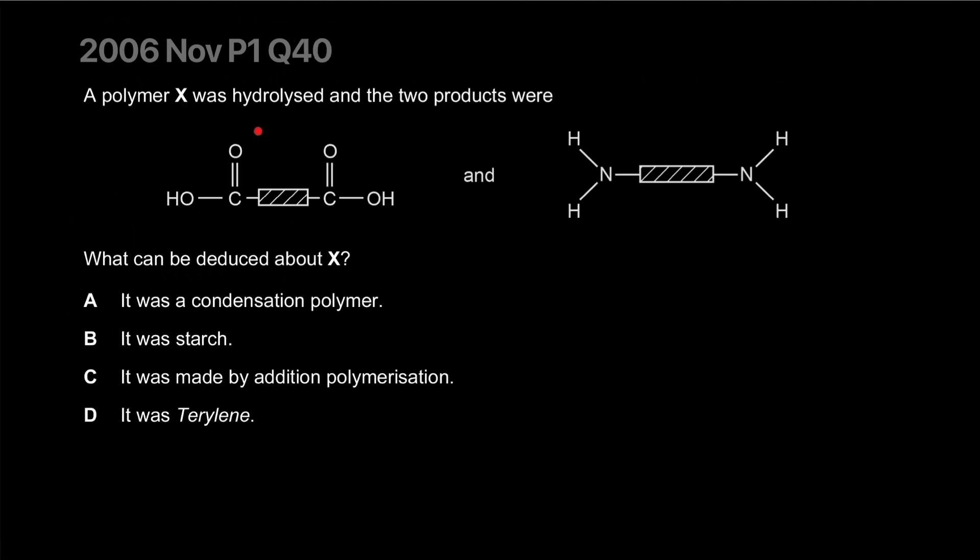A polymer X was hydrolyzed and the two products were shown. What can be deduced about X? It was a condensation polymer? Yeah, it was condensed together because a polyamide linkage was formed. H2O was given out so it falls under condensation. It was starch? No, it wouldn't have an amine in it. So this is out.